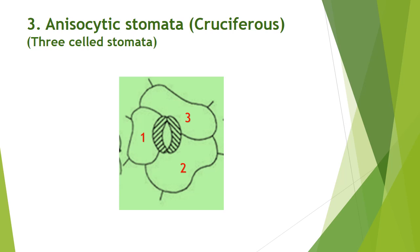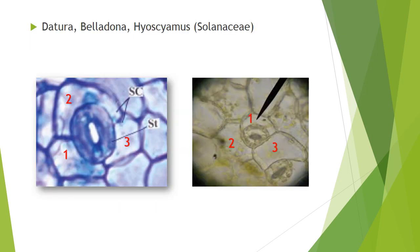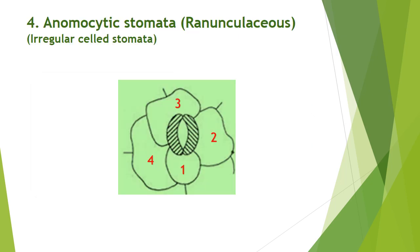The next type is anisocytic stomata, also called cruciferous stomata or three-celled stomata. Here, guard cells are covered by three subsidiary cells, out of which one is smaller than the other two. In the picture, cell number one is relatively smaller than cells number two and three. This type of stomata is generally found in Solanaceae family plants like Datura, Belladonna, and Hyoscyamus. In the microscope photograph, one, two, and three are labeled as subsidiary cells, with one being smaller than the others.